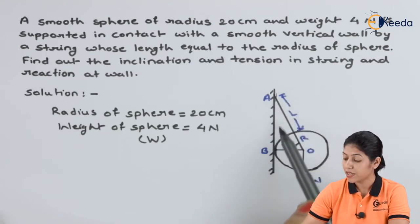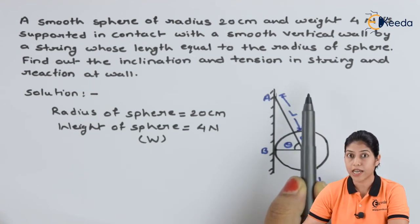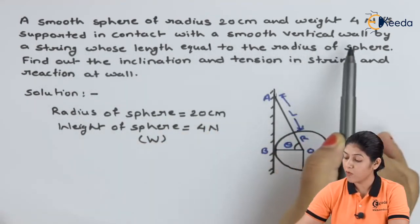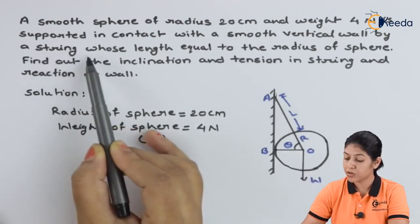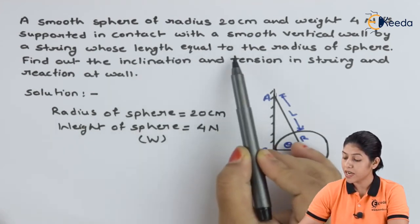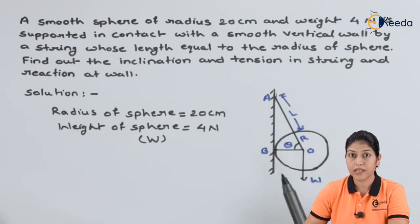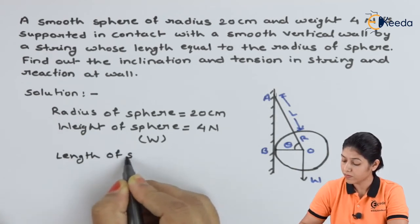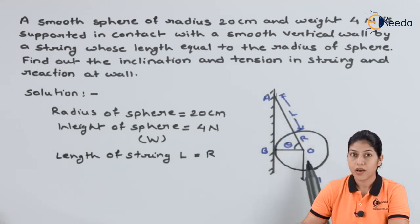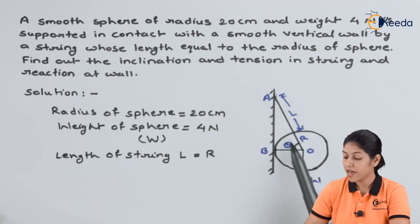There are two points on the smooth wall: A and B. Since the term smooth vertical wall is given, we won't consider any friction force on this wall. This sphere is connected to the smooth vertical wall by a string — this inclined line represents the string. The length of the string equals the radius of the sphere, so this condition relates the length of the string and the radius of the sphere.